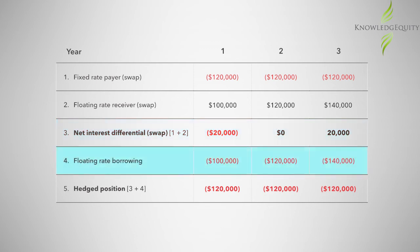Item four is the floating rate borrowing and represents the actual cash payment on the existing borrowing, calculated as two million dollars times the BBSW rate. Item five is the hedge position, which nets the swap payment or receipt with the cash payment on the borrowing, and is calculated as item three plus item four.